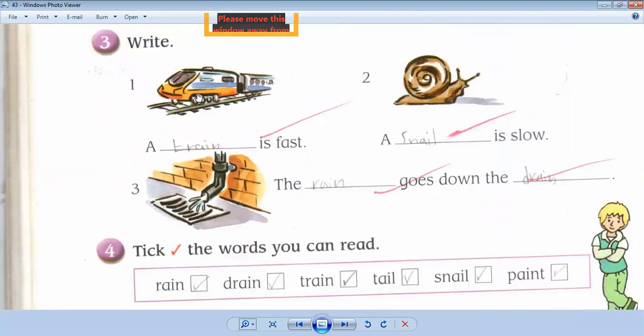A train. Ask your children, what is this? This is a train. So here we will write: a train. A train is fast. A snail is slow. The drain - the rain goes down the drain. Thank you so much.